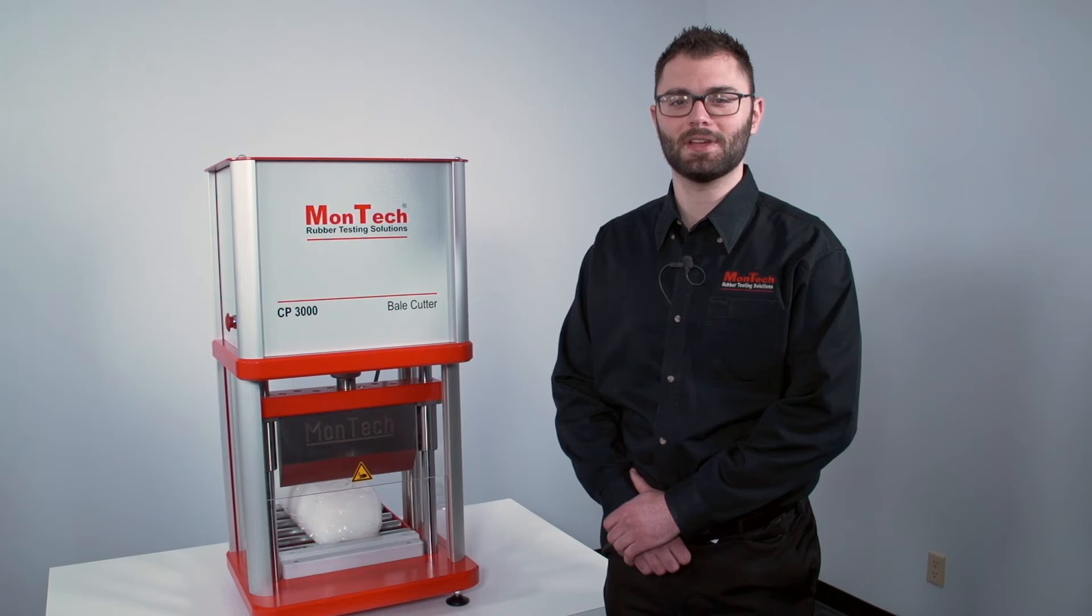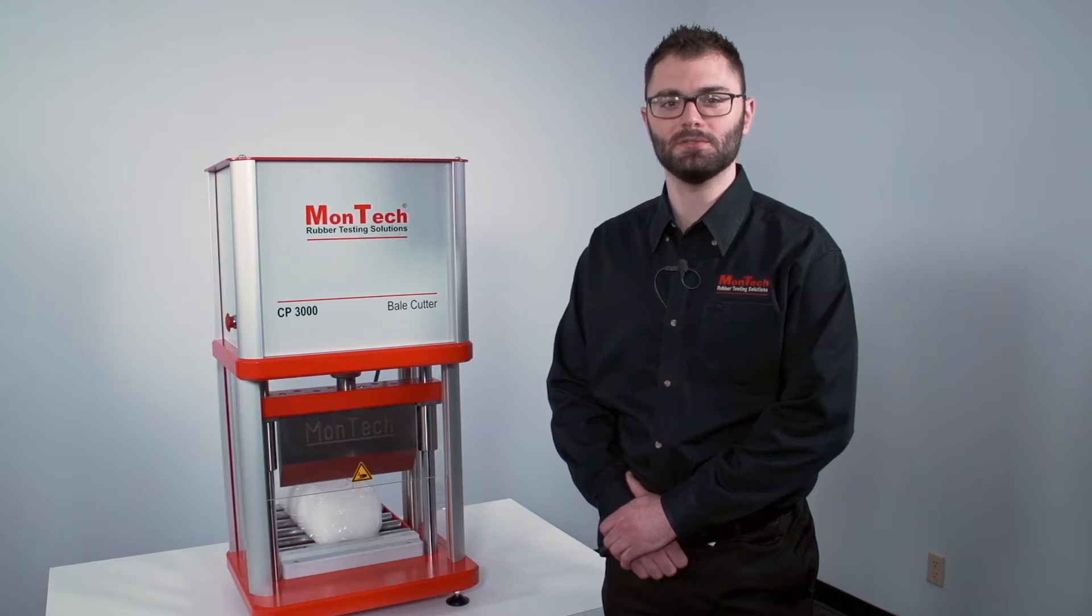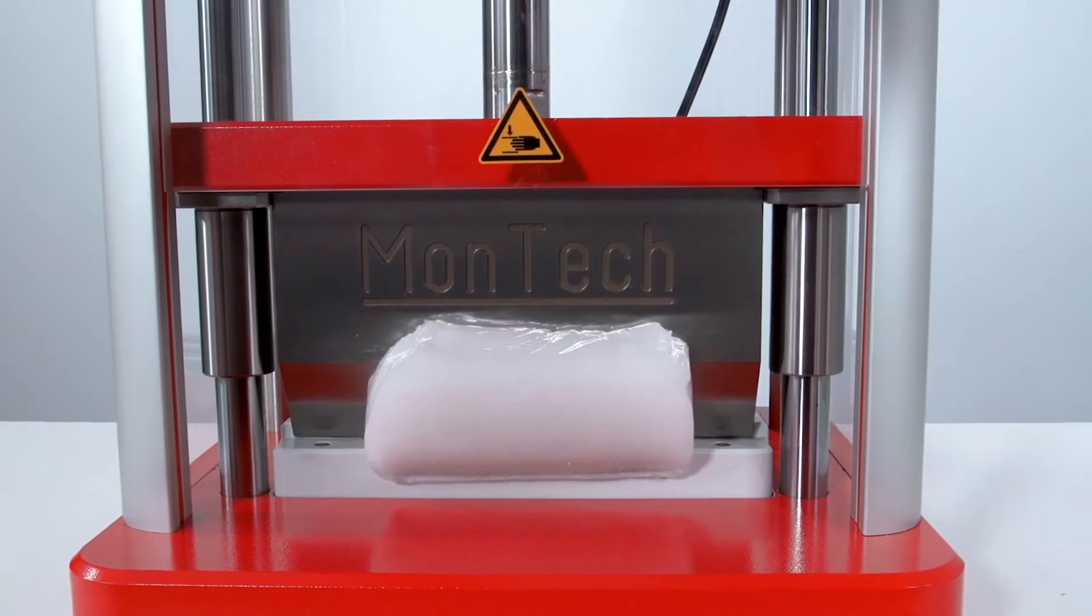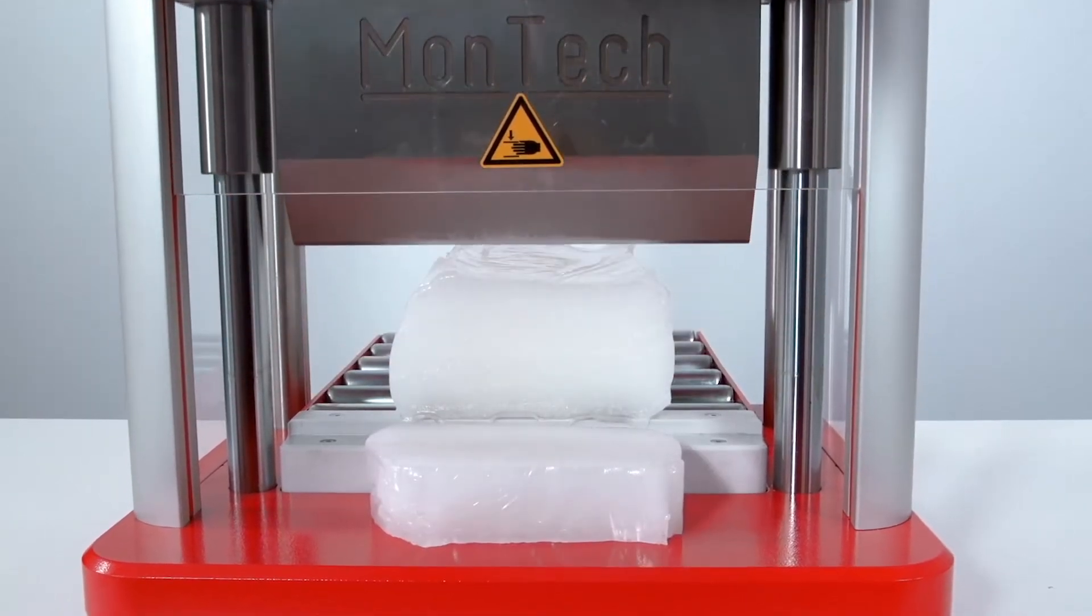The MonTech CP3000 Compact Bale Cutter scales down the rubber industry's toughest and safest pneumatic polymer bale cutter so it can be used just about anywhere. It is the ideal solution for cutting polymer bales, blocks, and rubber sheets for lab scale mixing and compounding.